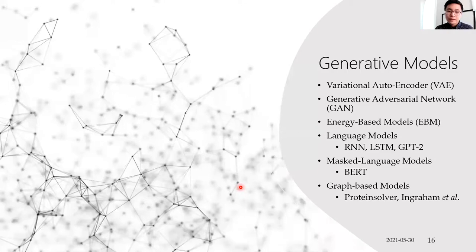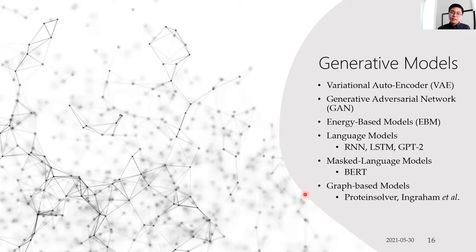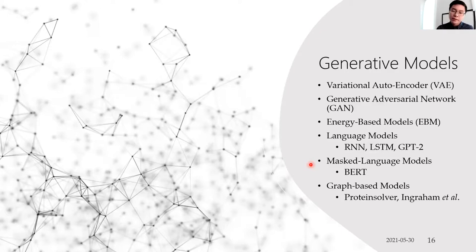Thinking about generative models in terms of p(sequence|function) removes you from specific architectures and methods. All types of generative models in mainstream machine learning — including energy-based models, VAEs, GANs, flow models, and diffusion models — have been applied to protein design or protein modeling in just the last few years, with huge growth in applications.